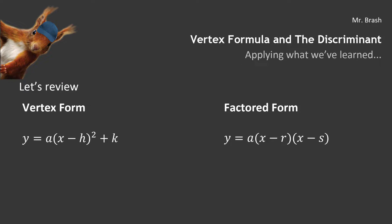Hello again, my name is Mr. Brash, and this little guy over here on the left-hand side wearing a beautiful baseball cap is Mr. Squirrel. He's trying to throw us for a loop today. I almost didn't recognize him. Here I'm going to talk about the vertex formula and something called the discriminant, and what we're basically doing is applying what we've learned so far.